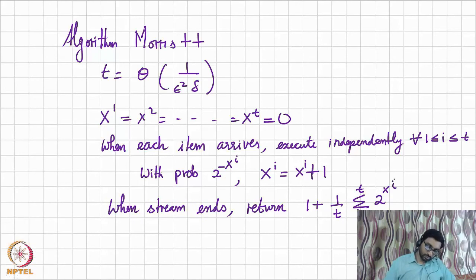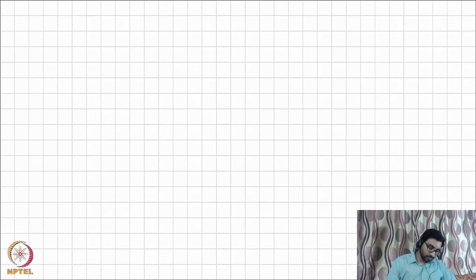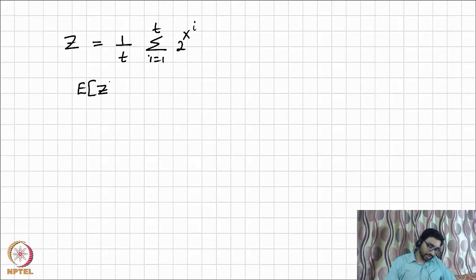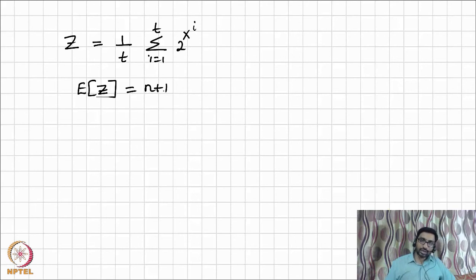Let's analyze Morris++. Let Z denote the average of the 2^(x_i) values, i.e., (1/t) Σ 2^(x_i). The expectation of each 2^(x_i) is n + 1, and summing them up and dividing by t gives E[Z] = n + 1. So we still get the correct expectation — hopefully the standard deviation is improved.